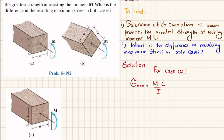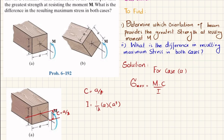So the maximum stress is equal to M times C divided by I, where C equals A/2. The moment of inertia for a square cross section is I = (1/12) × B × H³. Here breadth B equals A and height H also equals A, so I = (1/12) × A⁴.